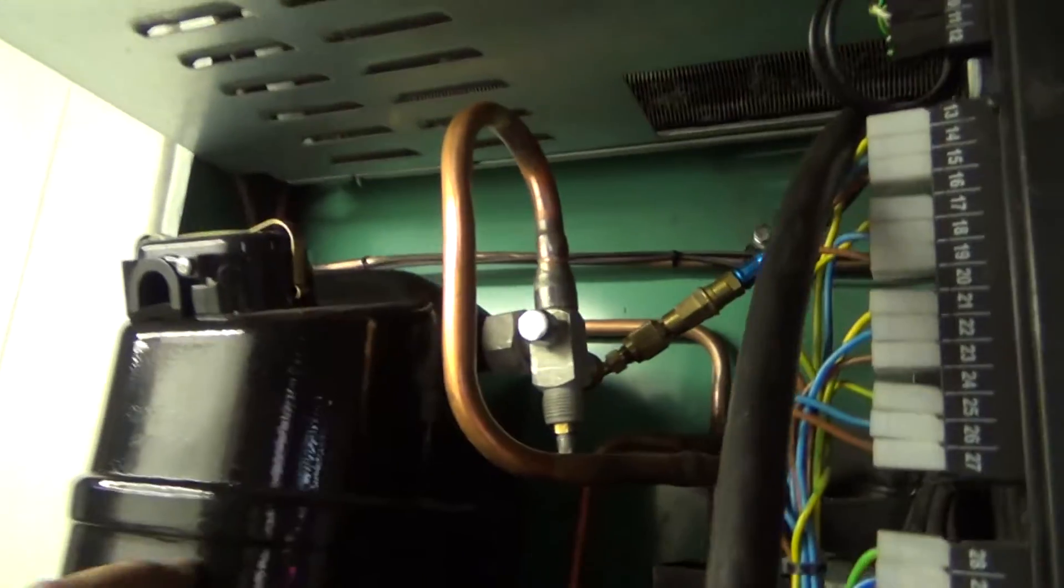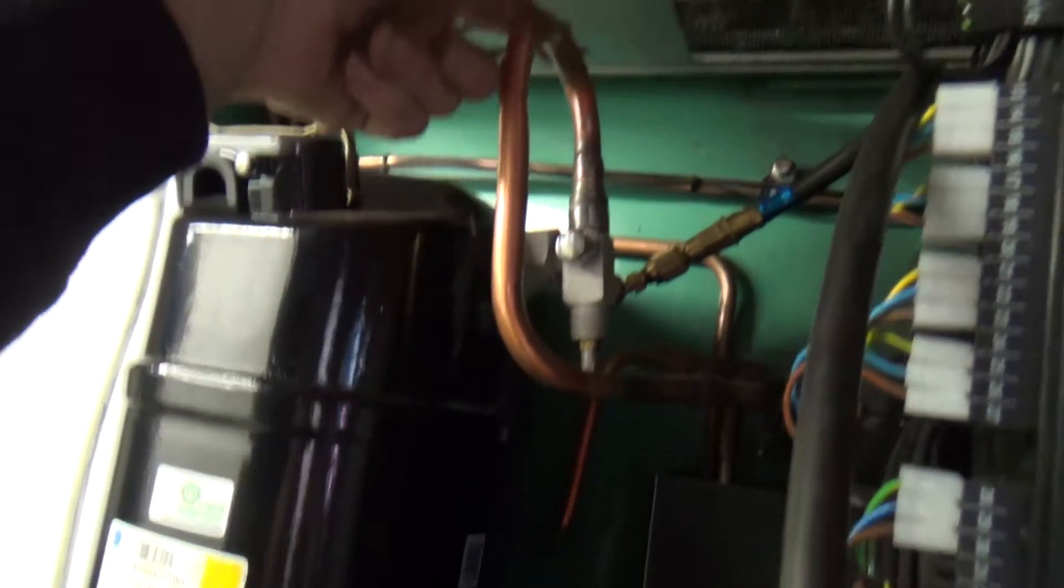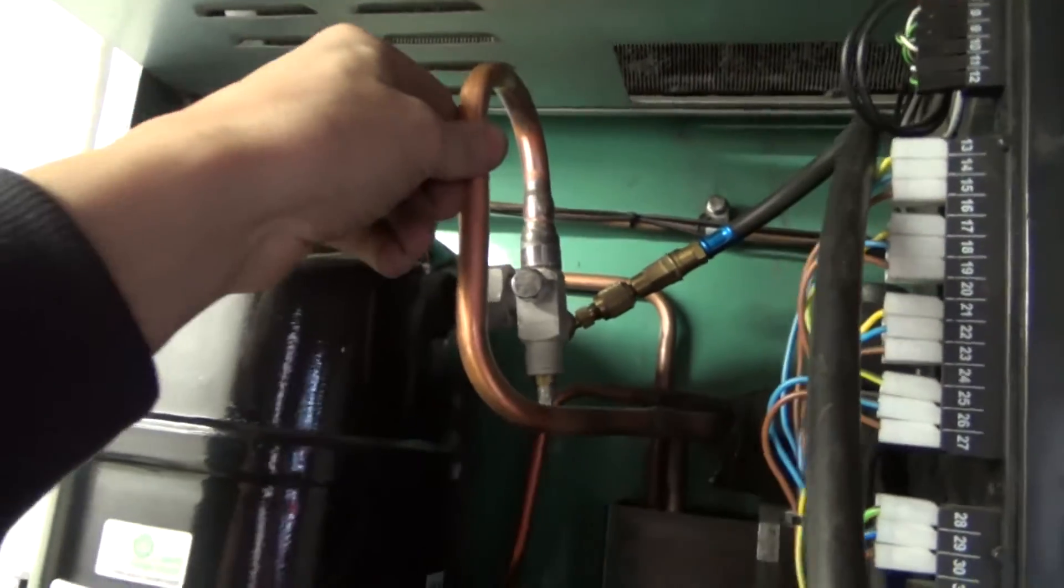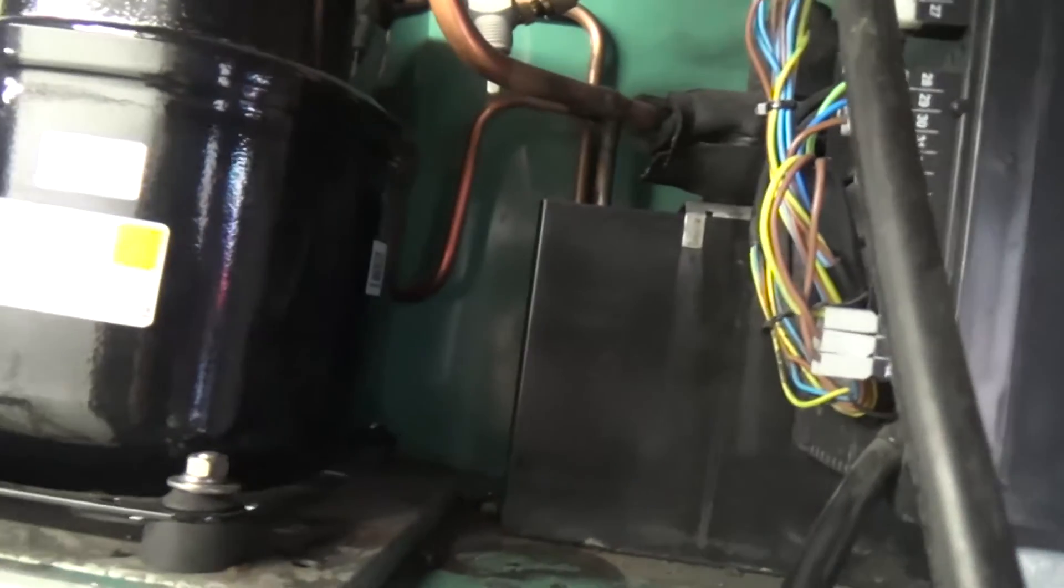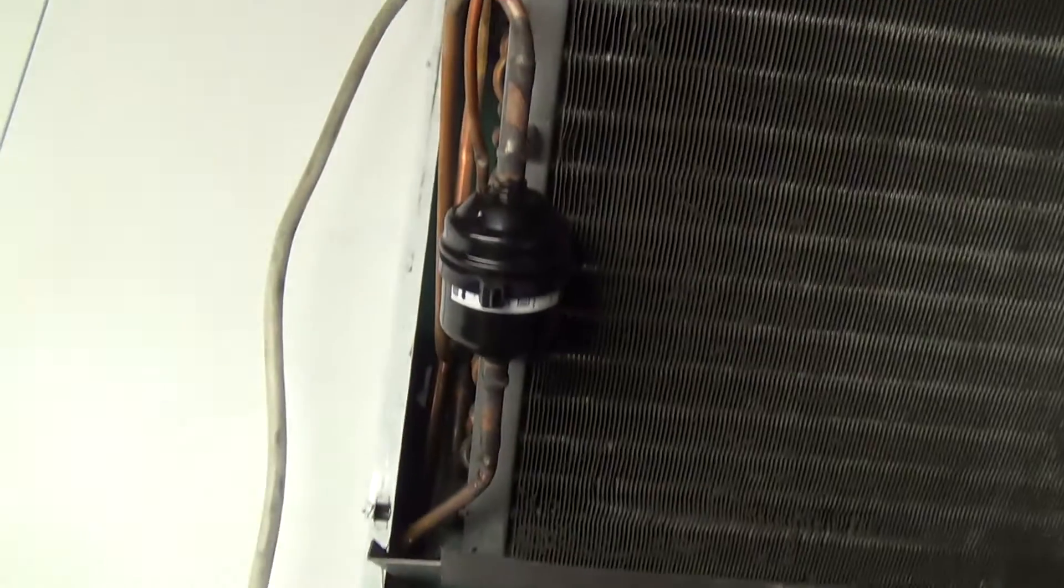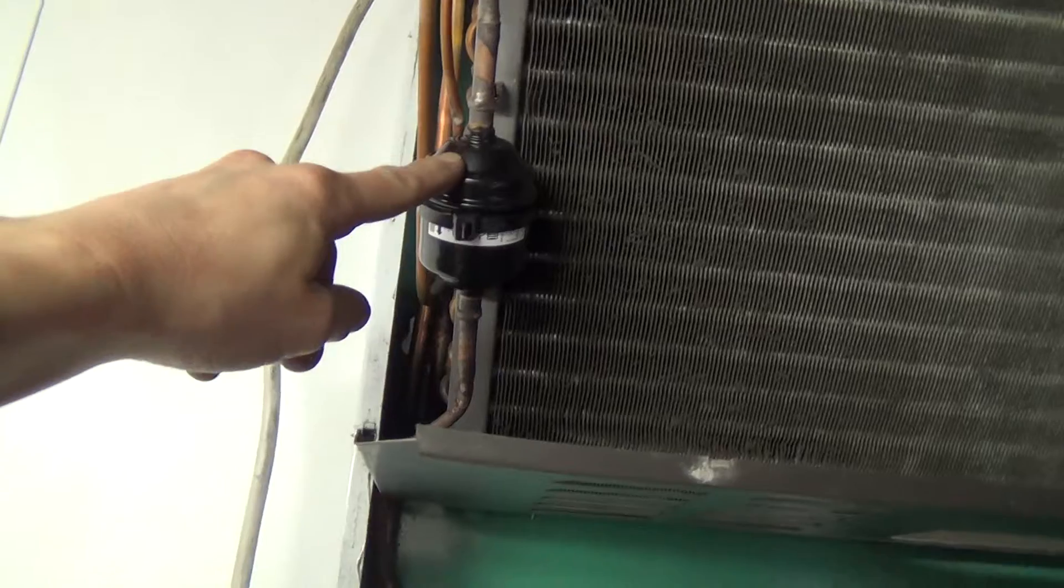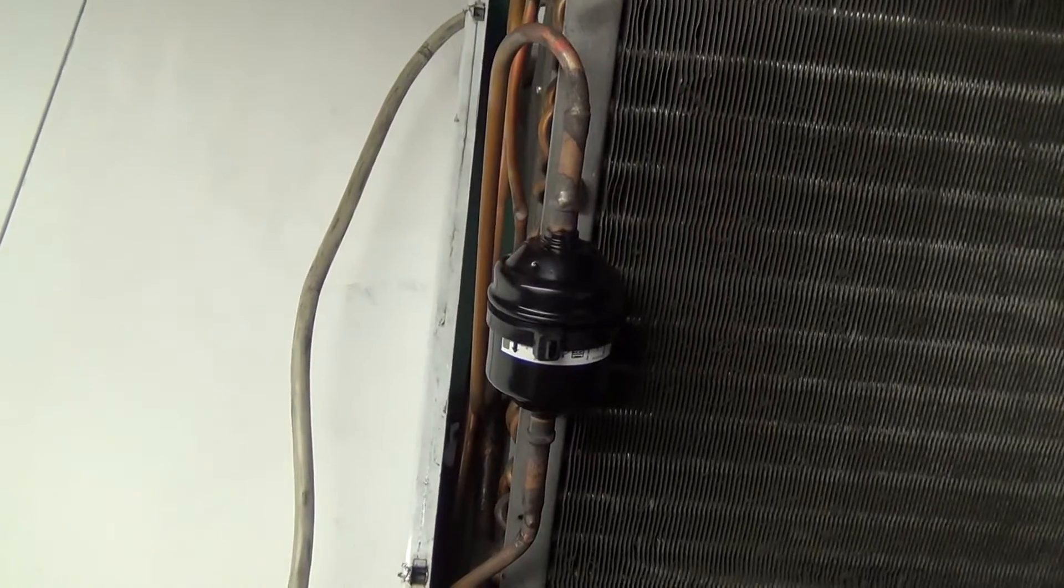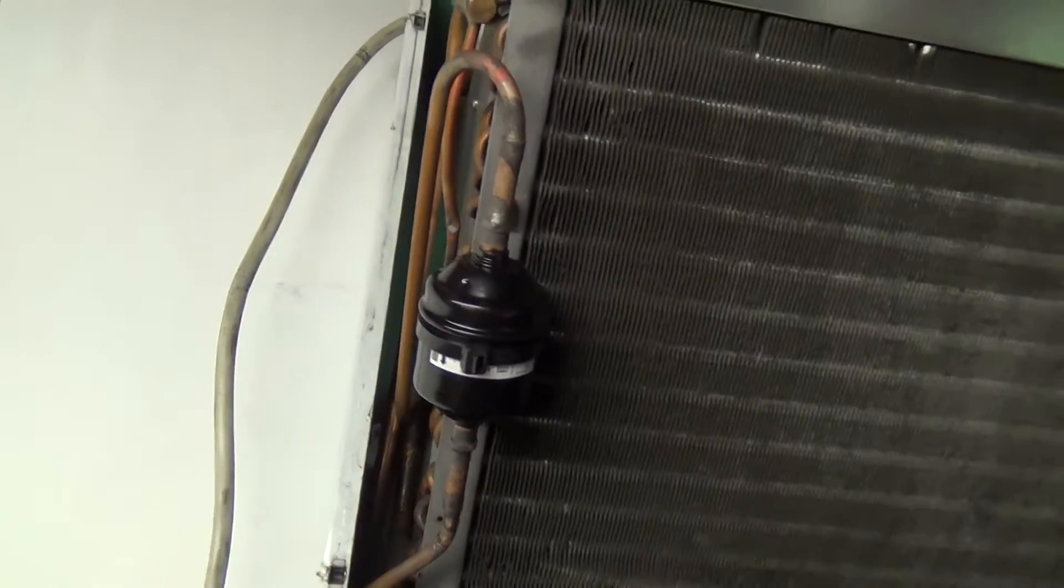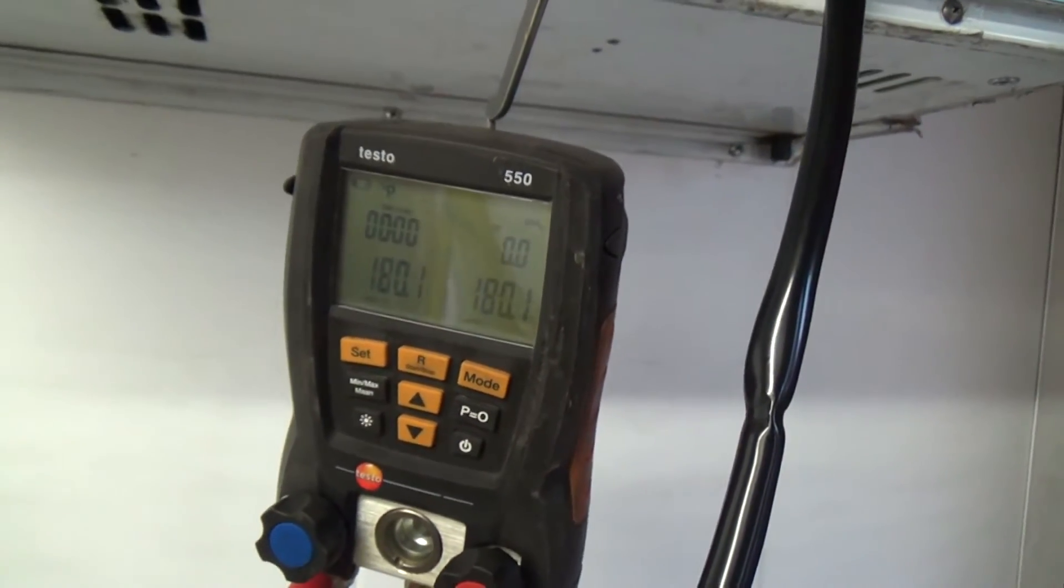Right, we've got the suction line braised in. We've brought the pipe along up and linked it over the top into there. Hopefully that gives us enough room to put the electrics in here. Put a new dryer in there. It had one of them copper spun ones with the beads in, so we've gone back with one of these solid core Danfoss ones. We've just got it under some nitrogen in there now. Kind of a sandwich. And see how that does.